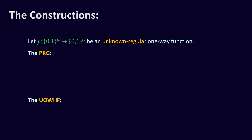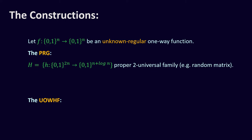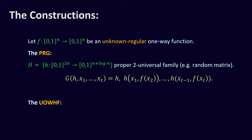Let me show you the constructions. Let f be an unknown regular one-way function. For the PRG construction, let h be a two-universal hash family from 2n bits to n plus log n bits — think of random matrices. The PRG takes as input a description of h and t inputs x_1 through x_t, and outputs h applied to each pair (x_i, f(x_{i+1})). Since the input has t blocks of n bits and the output has t−1 blocks of n+log n bits, we need t larger than n over log n, which matches the lower bound.